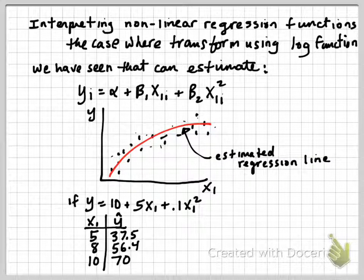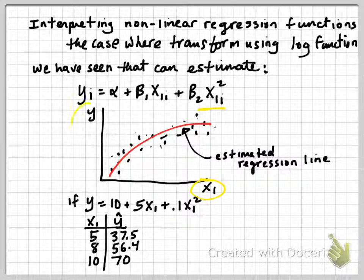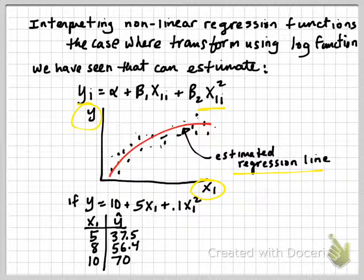We've already seen that we can consider a regression with a squared term where we take the x variable and square it. When we plot the resulting regression line with x1 on the x-axis and outcome y on the vertical axis, the estimated regression line will look something like that. It will no longer be a straight line. Instead, it'll be a curve, it'll be non-linear.